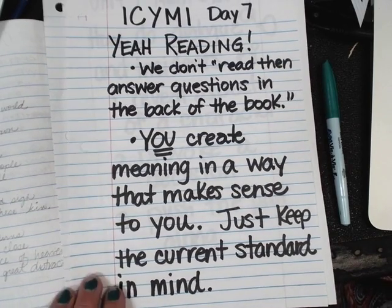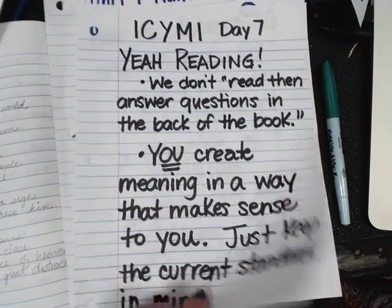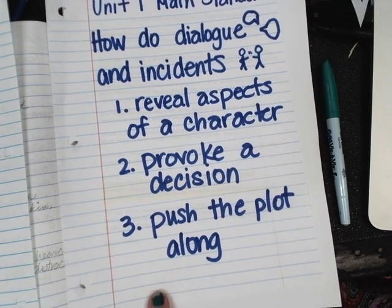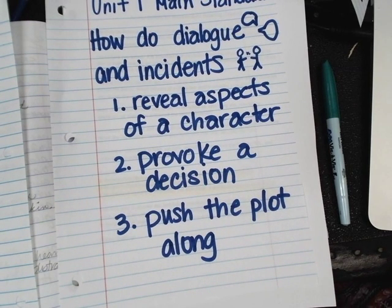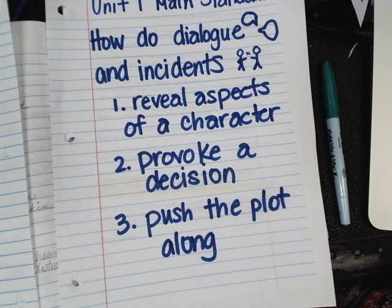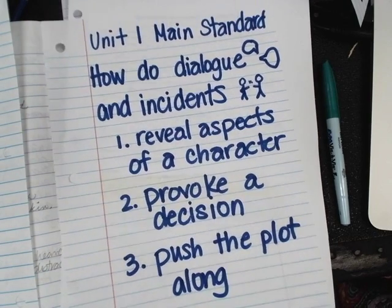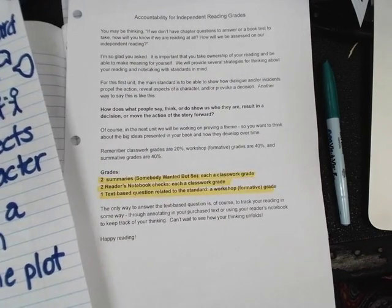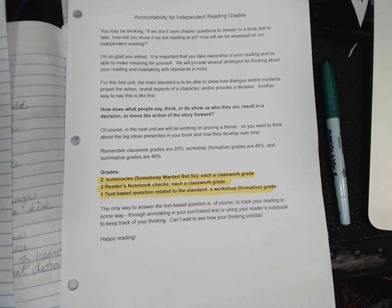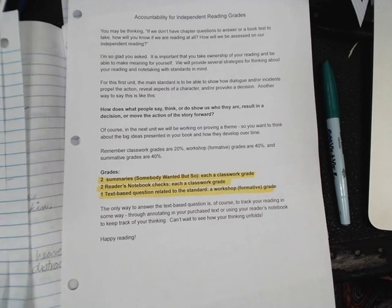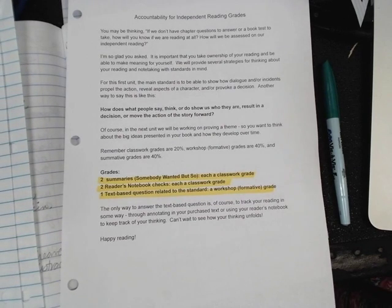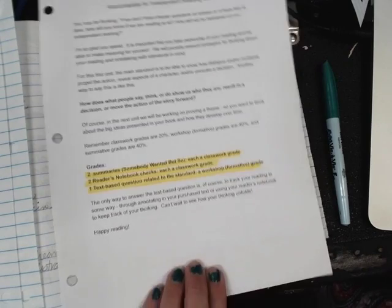Being school, of course, you need to keep our current standard in mind. Our standard that we're focusing on for unit one is: how do dialogue and incidents reveal aspects of a character, provoke a decision, or push the plot along? Another way to say that would be: how does what people say or think or do show us who they are, or result in a decision, or move the action forward?